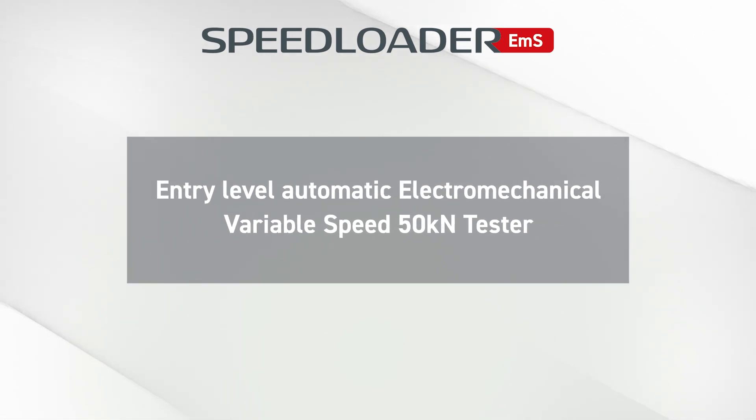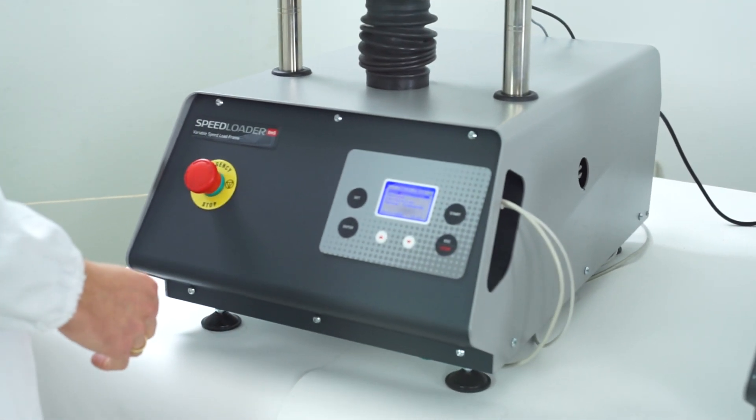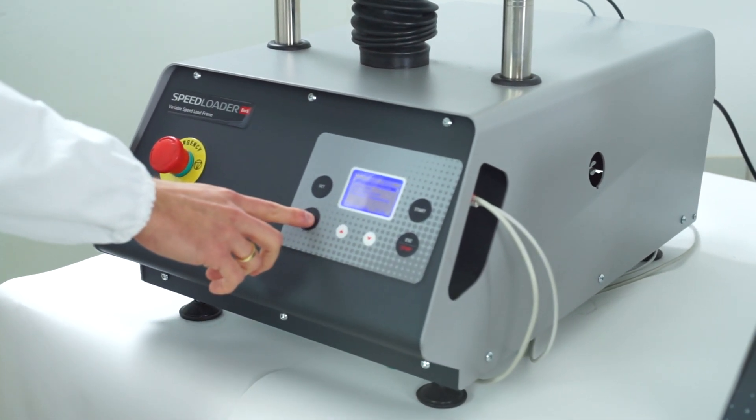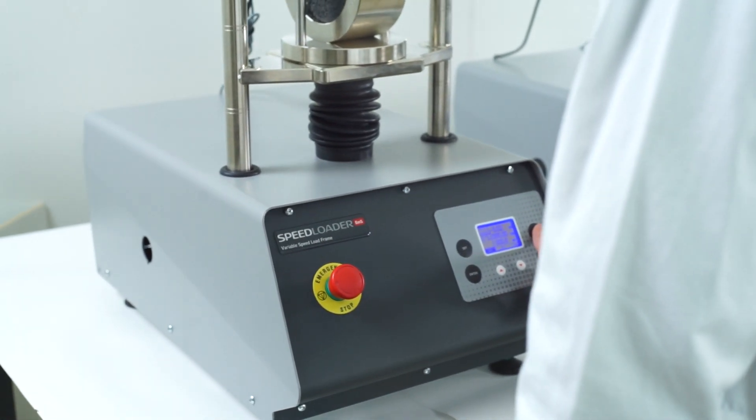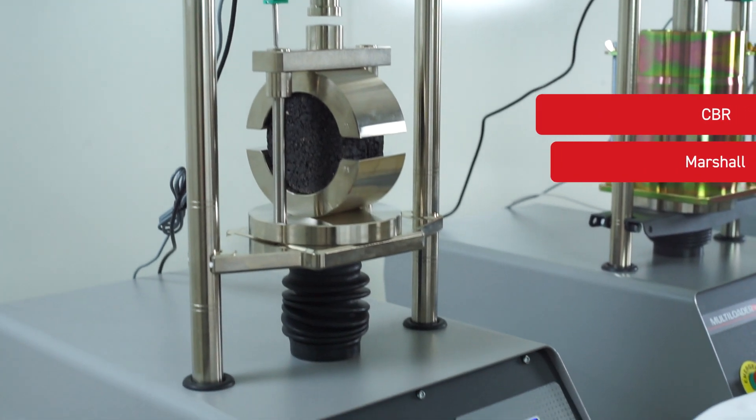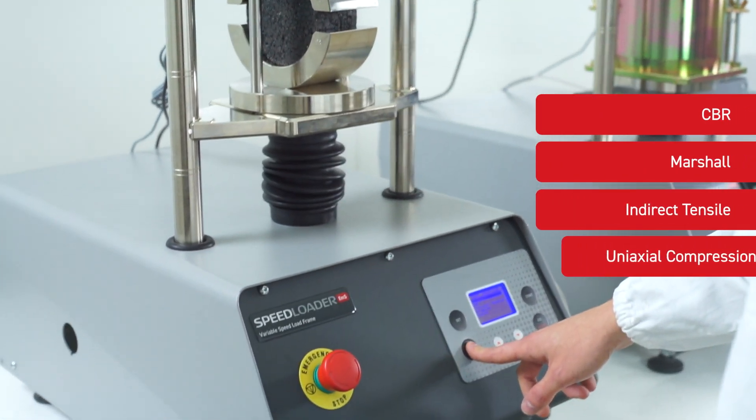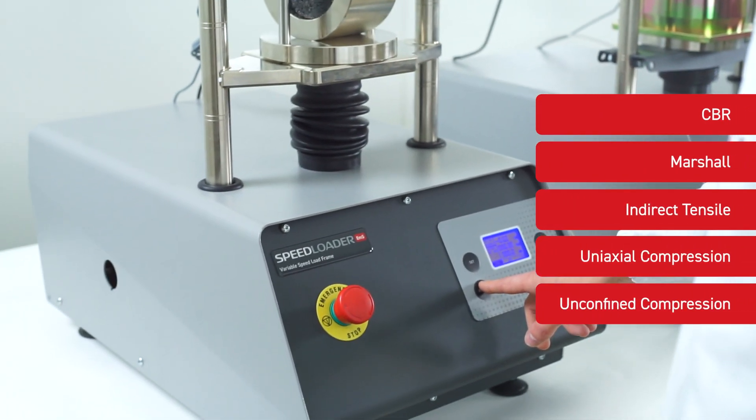The Speed Loader is ideal for performing compression and flexural tests. This is an ideal machine for cost conscious road base and soil laboratories wanting the best value equipment for performing standard displacement control tests such as CBR, Marshall, indirect tensile, uniaxial compression or unconfined compression.